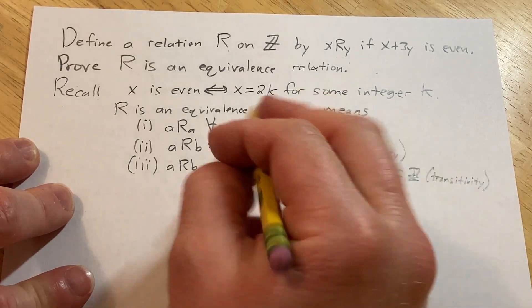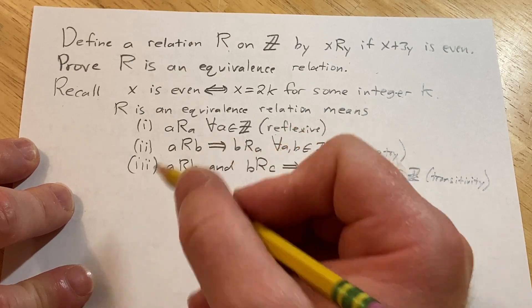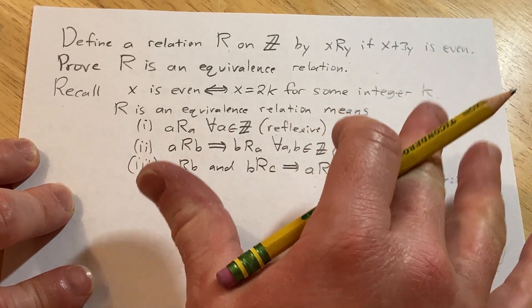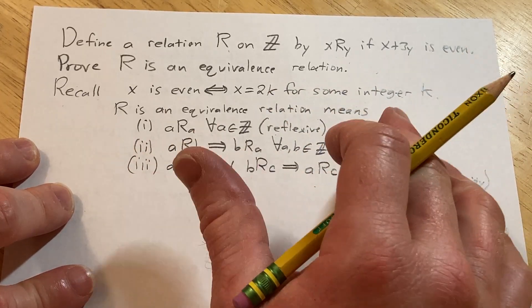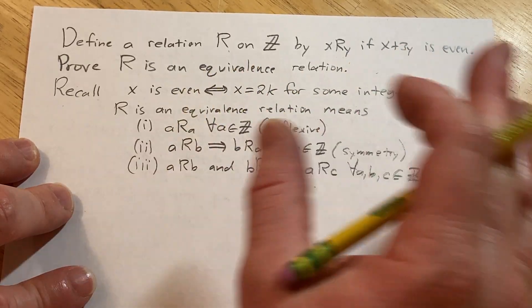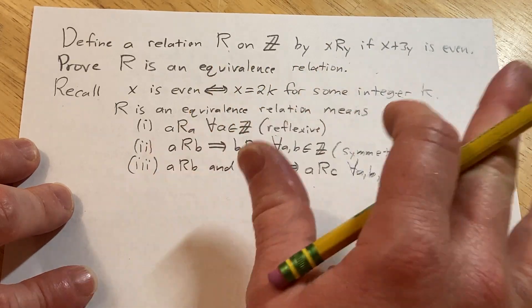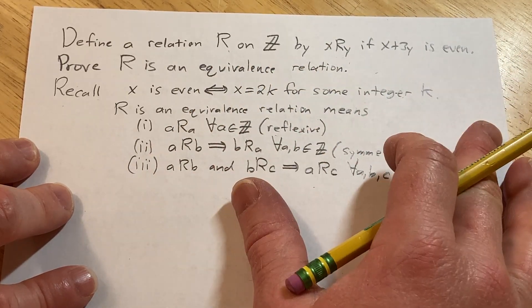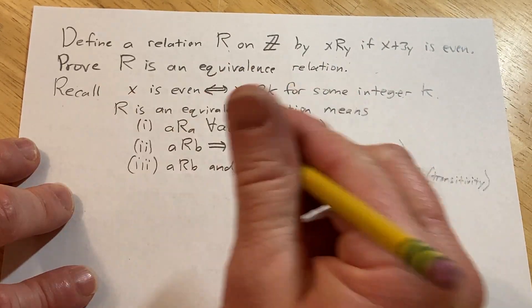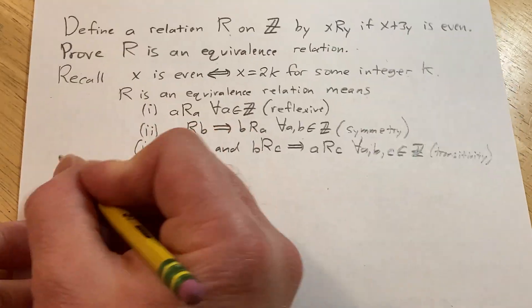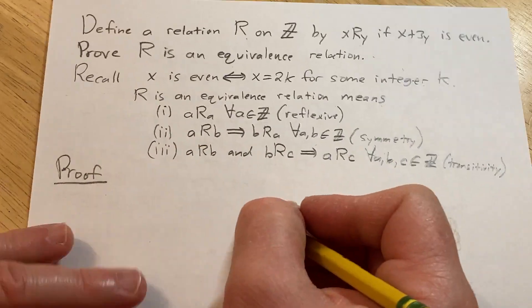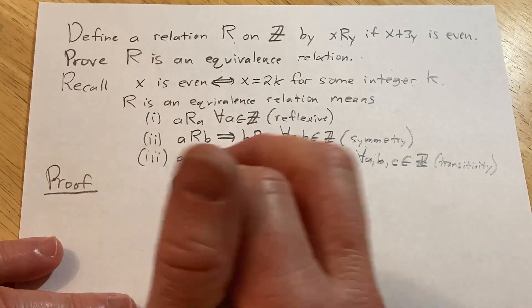Once you have a relation that exhibits all three of these properties we call it an equivalence relation, and they are extremely important in mathematics because whenever you have an equivalence relation on a set you can break up the set into equivalence classes. You can use it in all areas of math—it comes up in number theory, group theory, topology, etc. It's one of those really core foundational things that shows up in all of math. Let's do the proof.